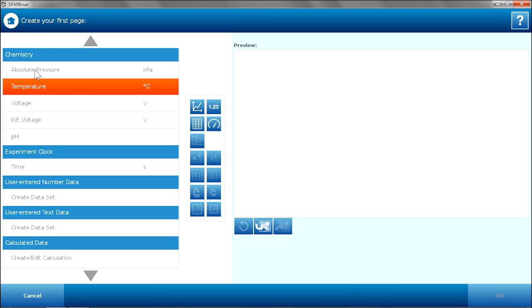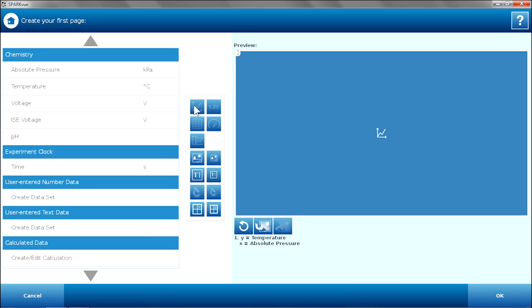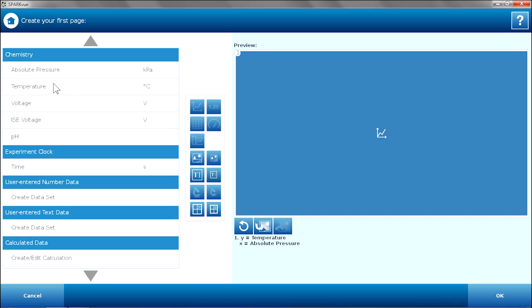I am going to look at temperature and pressure in a graph. I also want to monitor those two values, so I am going to look at them in a digits display. Temperature in digits and pressure in digits.